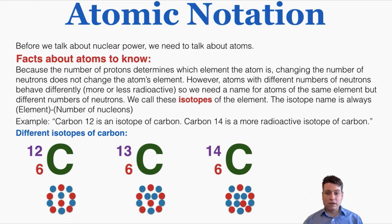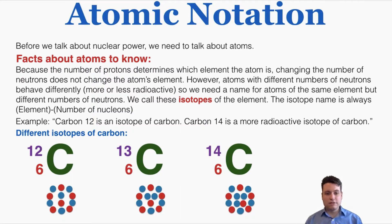Because the number of protons determines which element the atom is, changing the number of neutrons does not change the atom's element. However, atoms with different numbers of neutrons behave differently — they're more or less radioactive. So we need a name for atoms of the same element but different numbers of neutrons, and we call these isotopes. The isotope name is written as the element followed by the number of nucleons. For example, carbon-12 is an isotope of carbon, and carbon-14 is a more radioactive isotope of carbon.